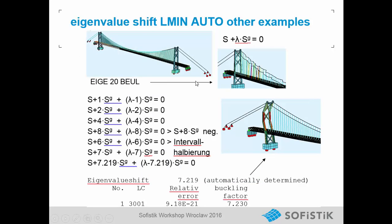Also, for this bridge, if we solve our system without the eigenvalue shift, we only get eigenvalues that are not of interest because these are buckling eigenvalues with the cable under tension — so they are negative. If we use the AUTO SHIFT LMIN AUTO, we immediately get the first buckling factor with the information we want.